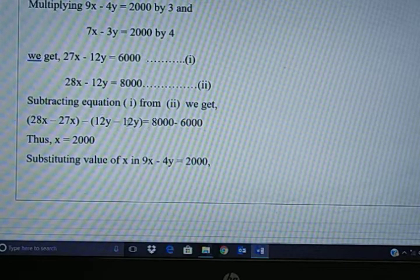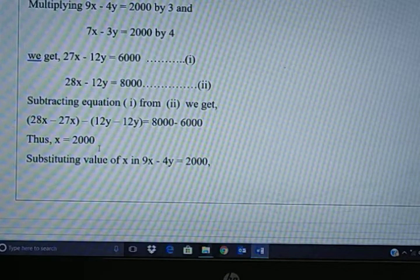And when 12y minus 12y you get 0. So you get here x equals 2000.